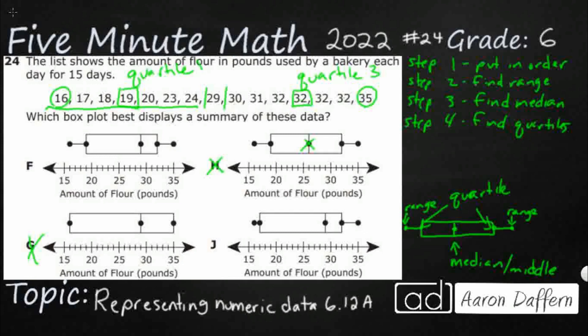So we're looking for these little boxes on 19. Looking good on F. And we're looking good on 19 and 32. And J, nope. The first quartile is wrong. So our answer here is going to be F.